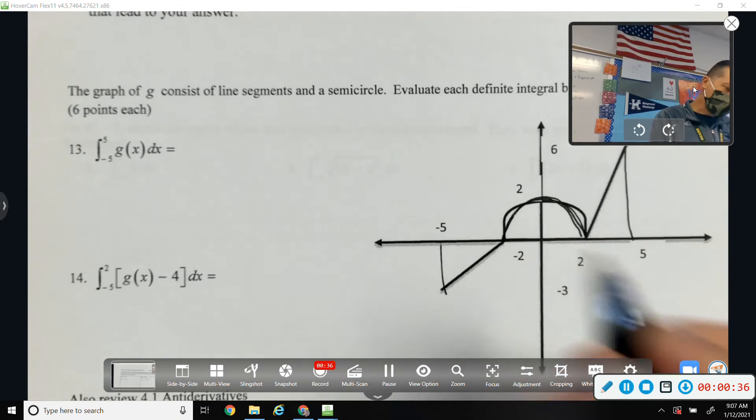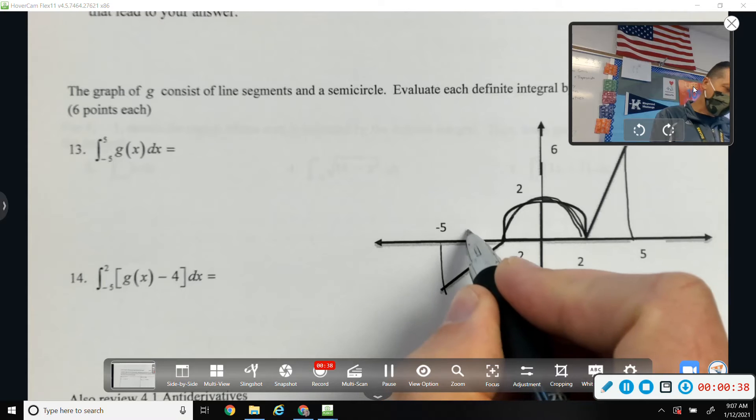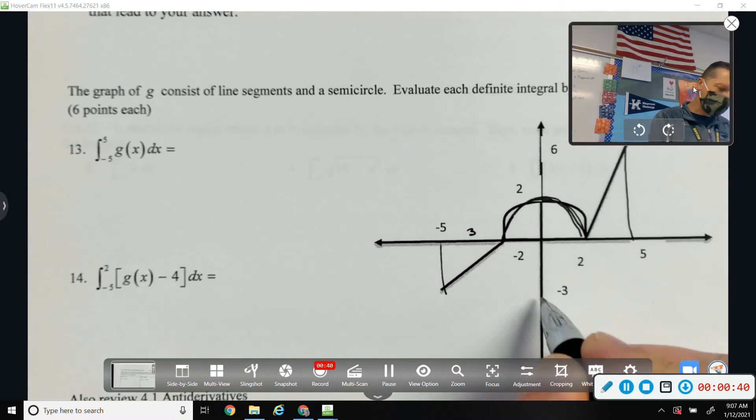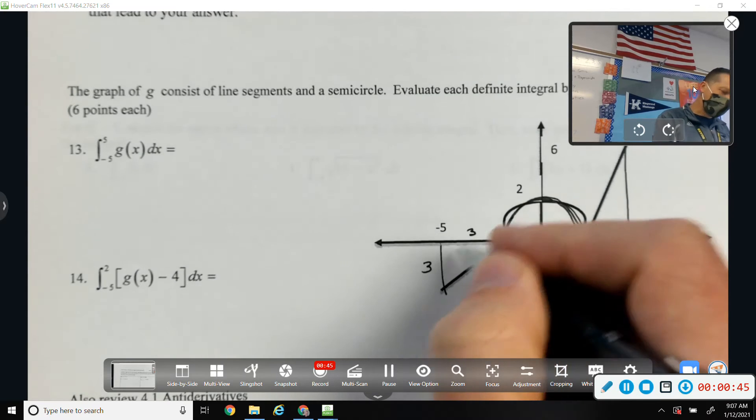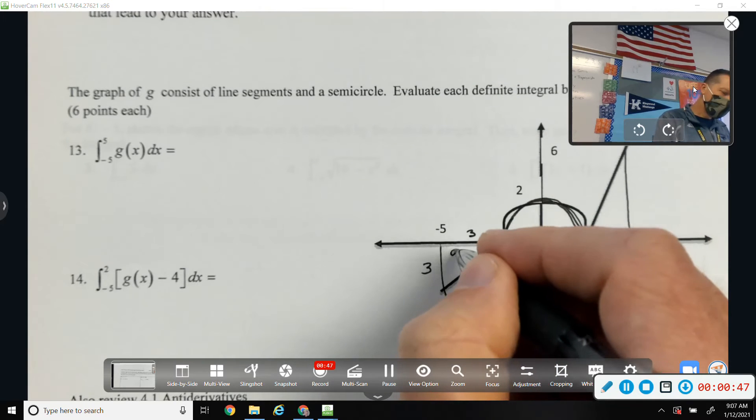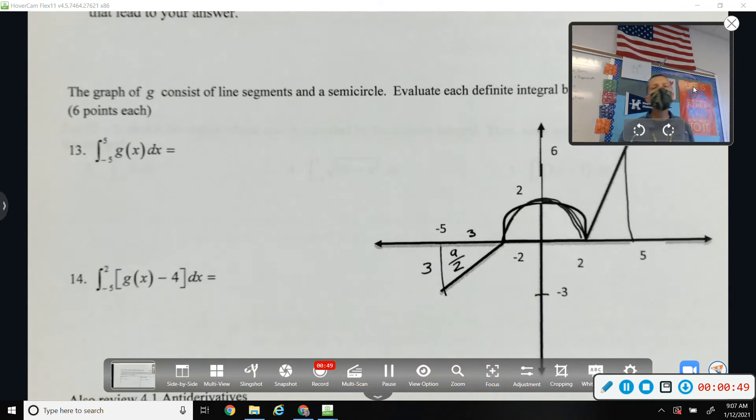This is a triangle, so from negative 2 to 5, that distance is 3. This distance is 3. So base times height over 2 would be 9 halves. I'm going to leave it labeled 9 halves because that's how one on the test is labeled. If you want to label it negative 9 halves to make sure you remember that it's negative, that might make more sense. But I'm going to leave it labeled 9 halves because there's one on the test where it's labeled positive, and you've got to know that it's negative.